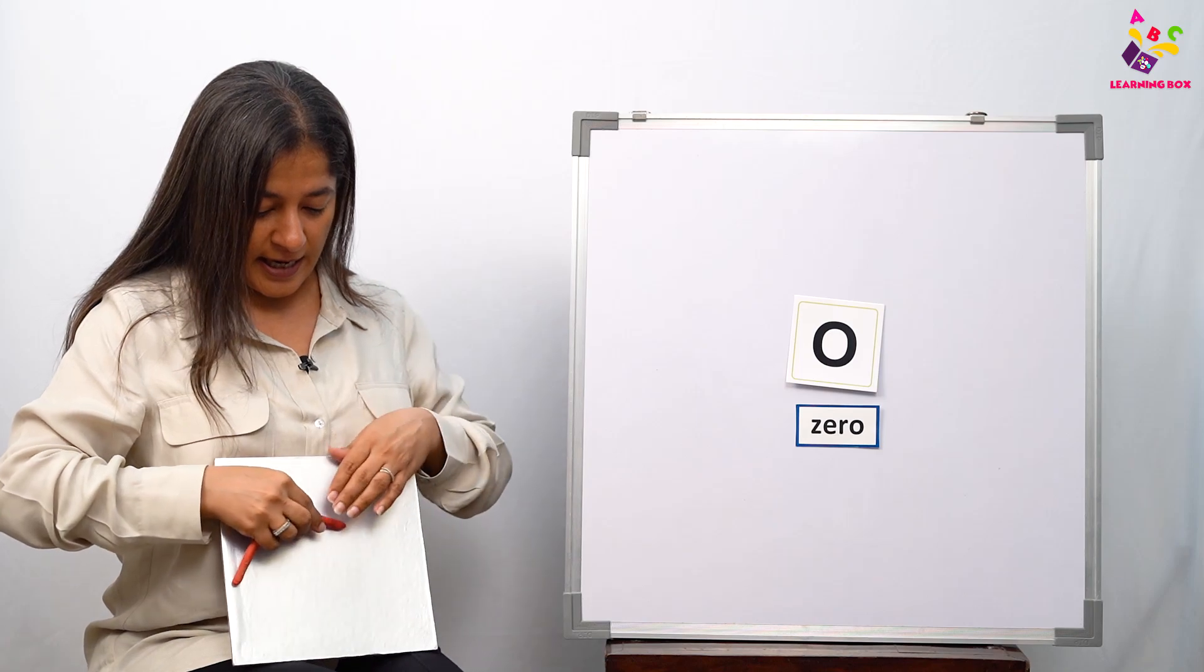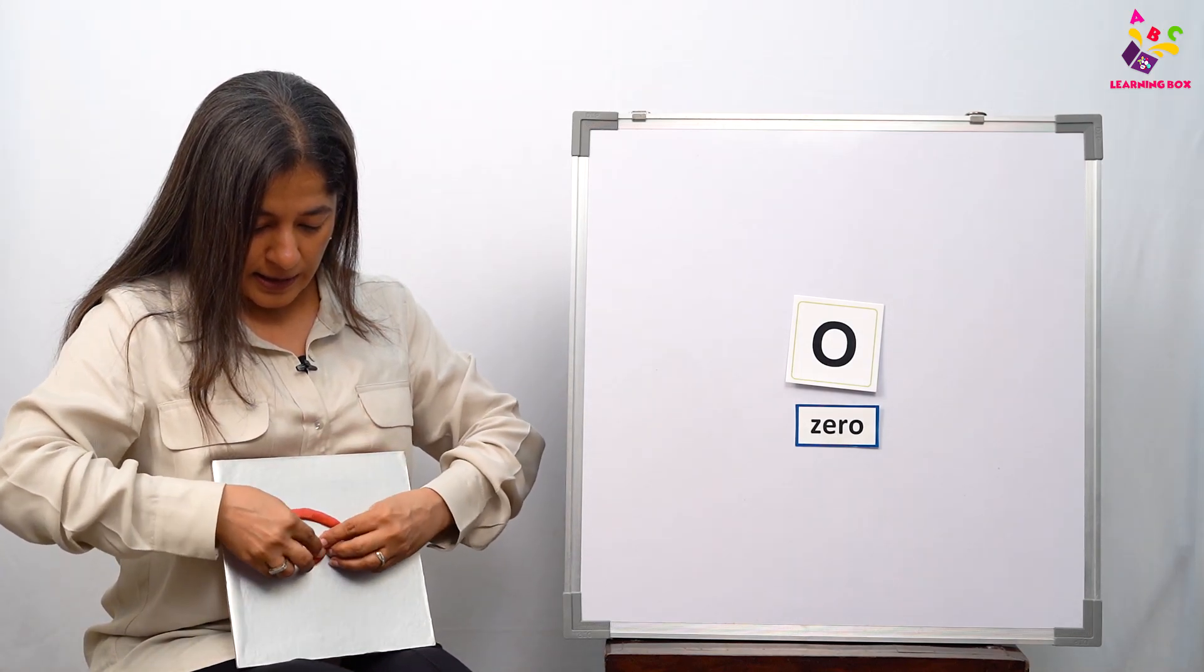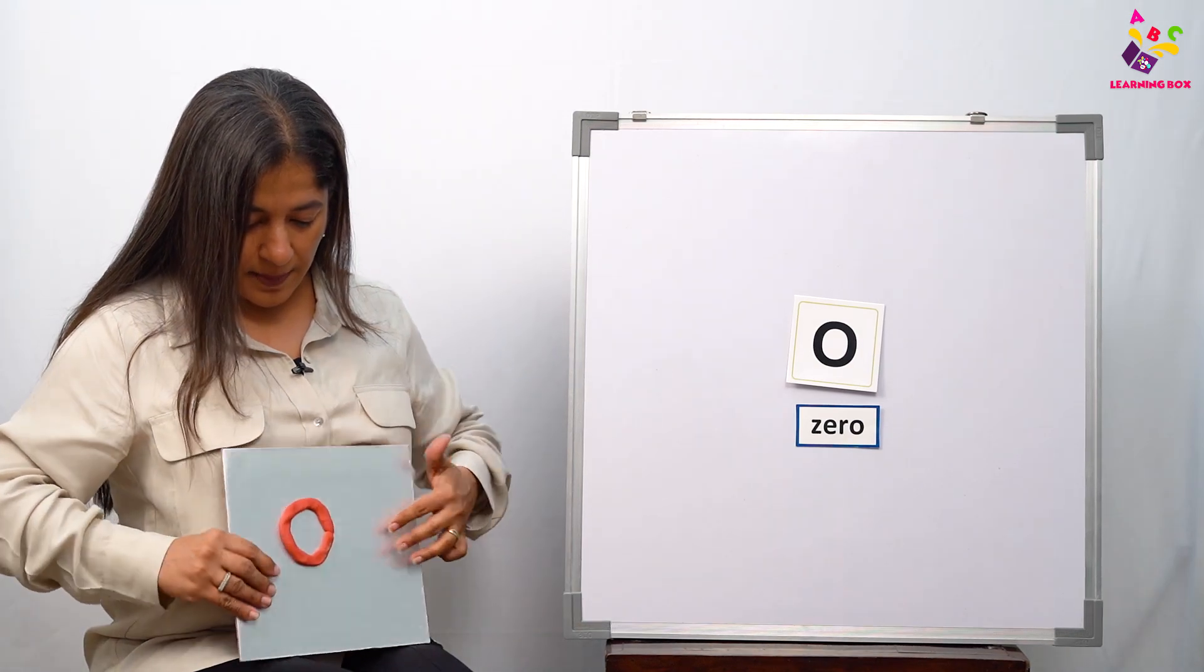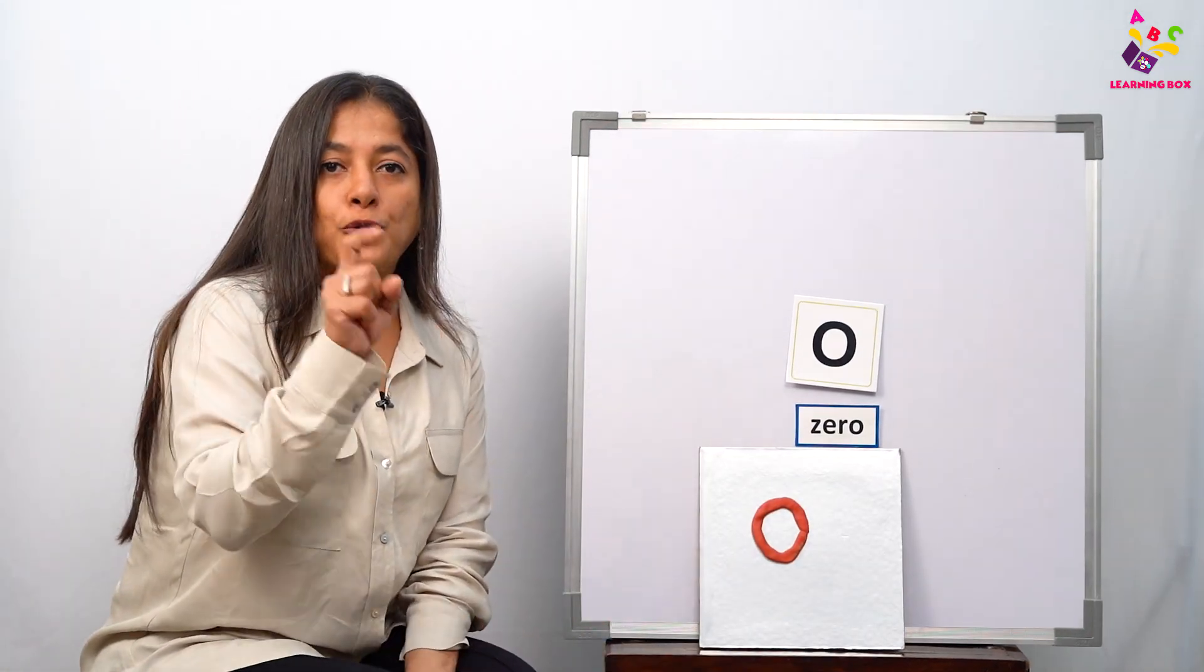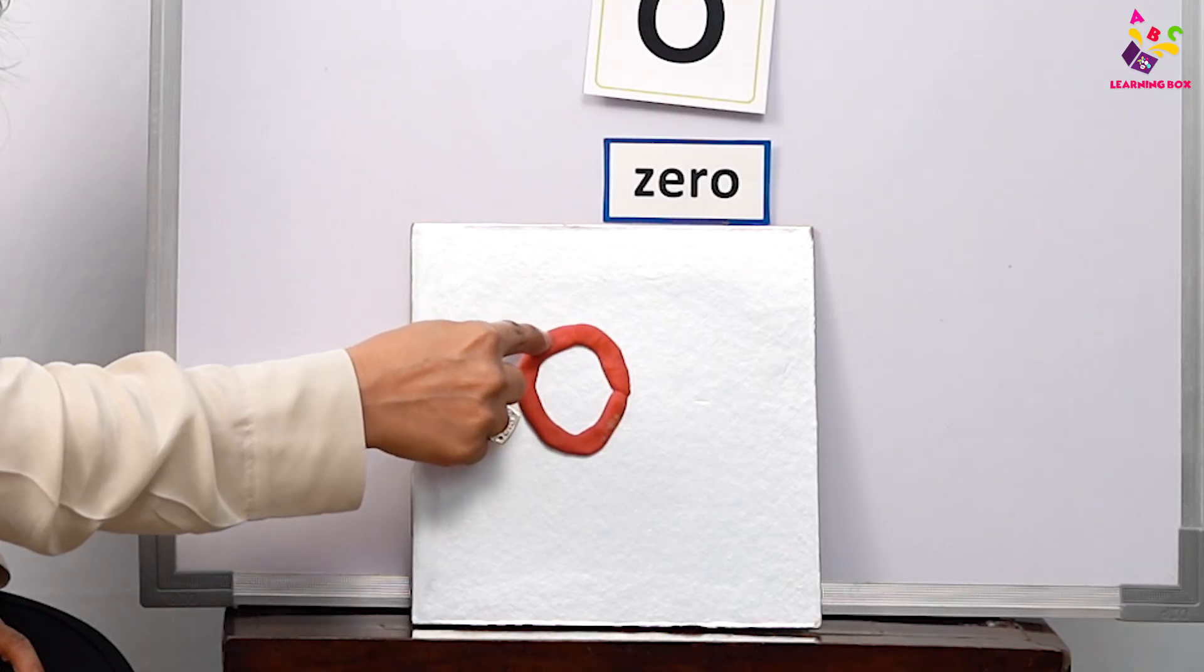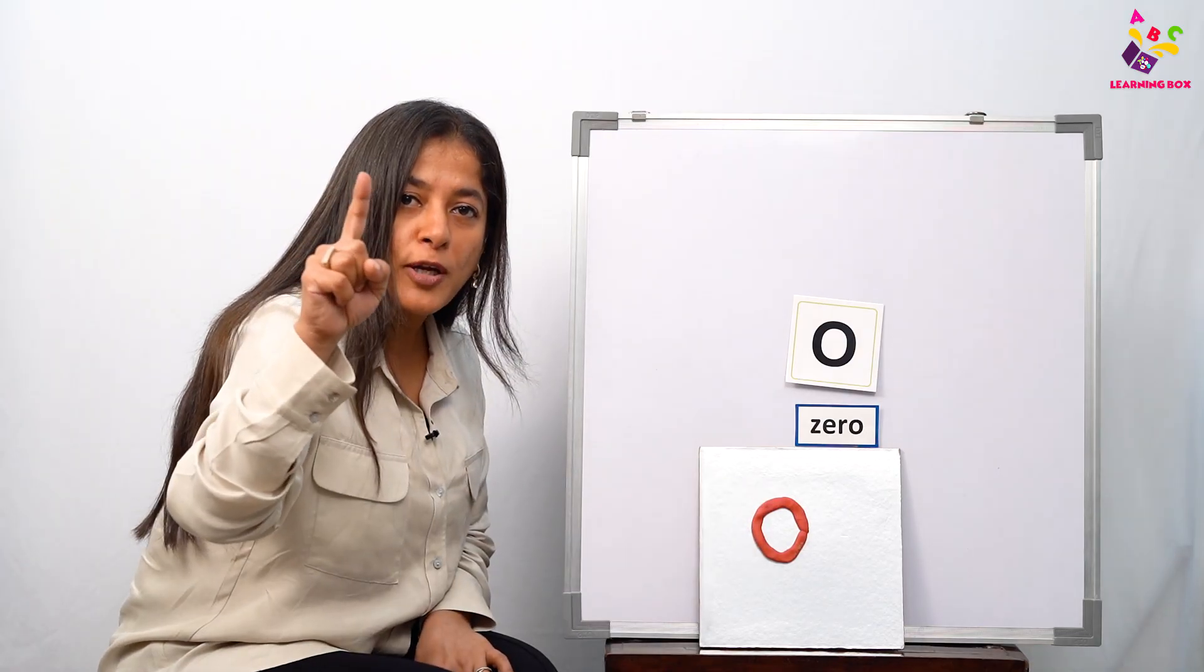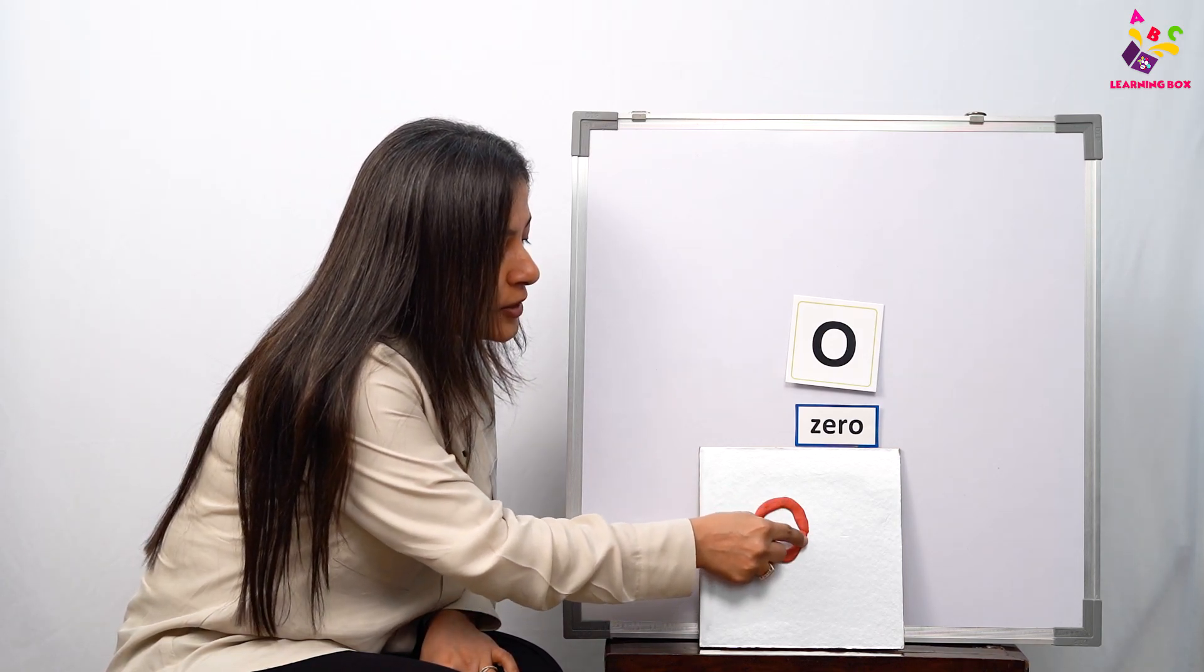What have we made? Number zero! I want you all to take your pointer finger and let's trace it. Go right around without stopping, and that's number zero. Let's do it again. Show me your pointer fingers and start from the top, go around, complete the circle. This is number zero.